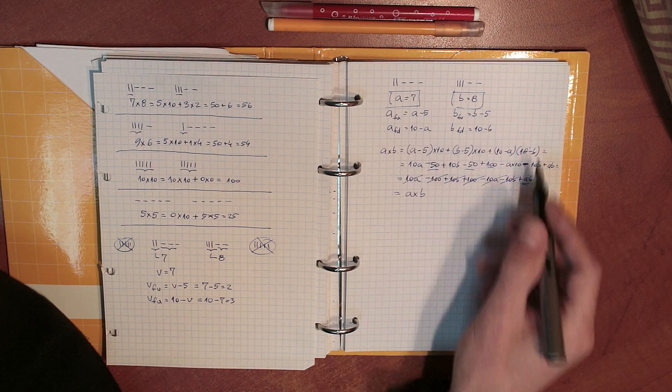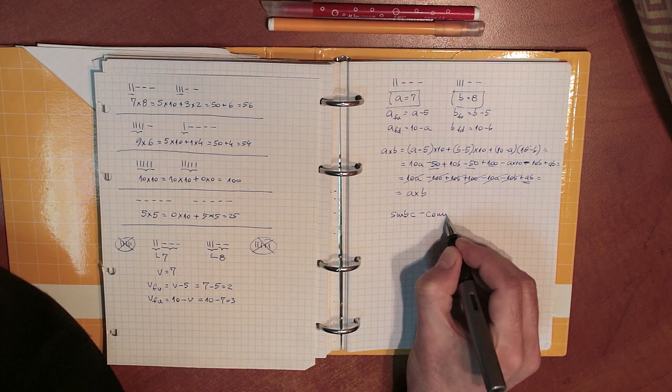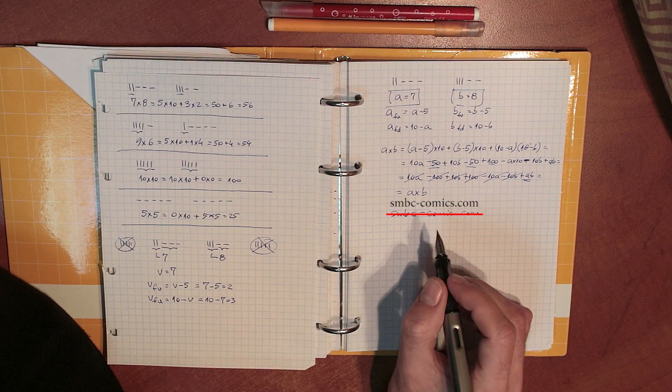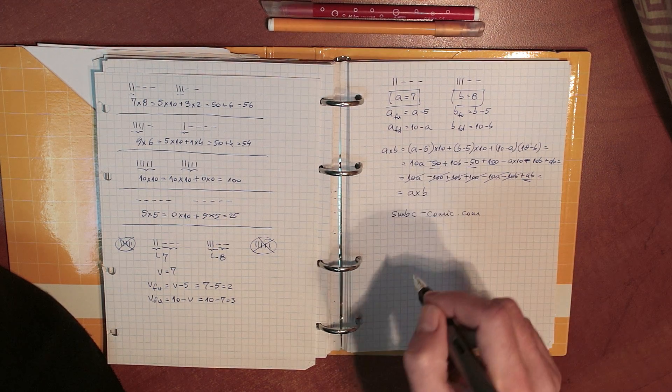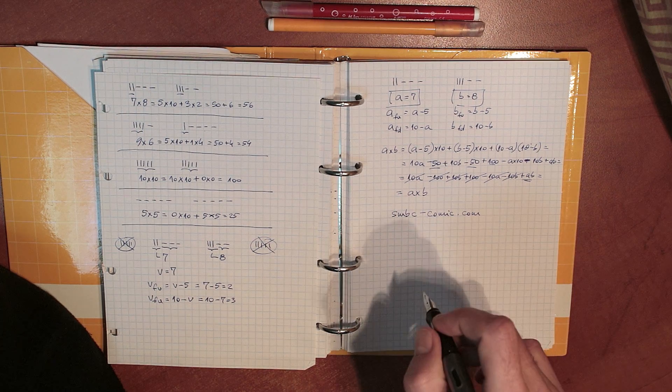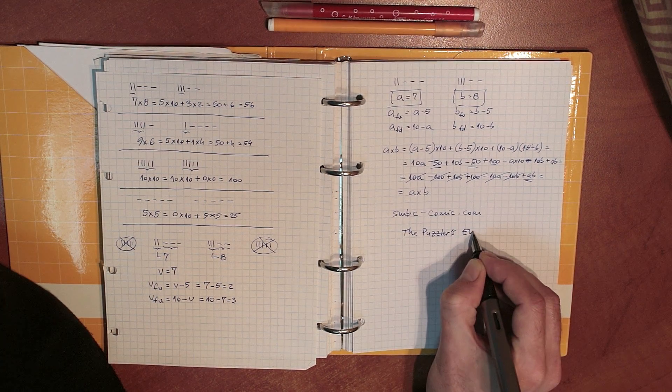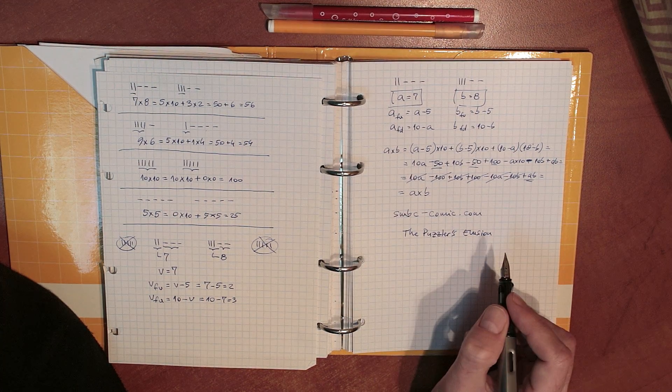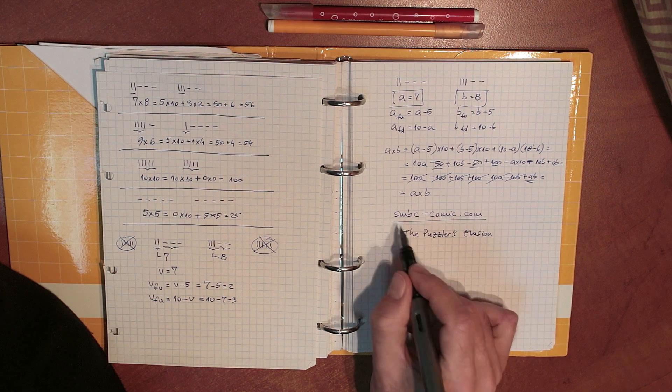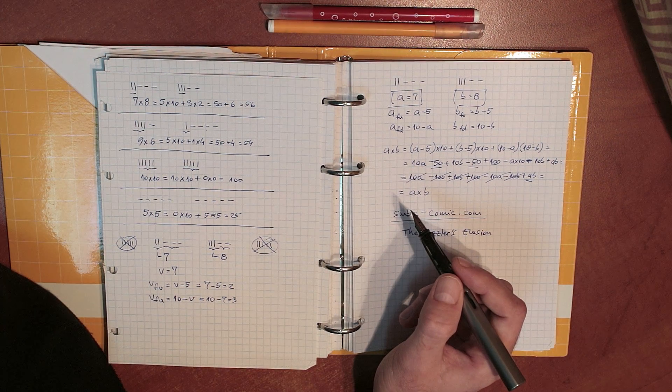I actually found out about this whole thing on SMBC, the Saturday morning breakfast cereal website, which, in a comic, which appeared in June 2010, and the trick was found in a book by Dr. Dennis Shasha, a computer scientist, science teacher at NYU, in a book called The Puzzlers' Illusion, which appeared in 2006. And the comic, which is linked below, the book is also linked below, by the way.